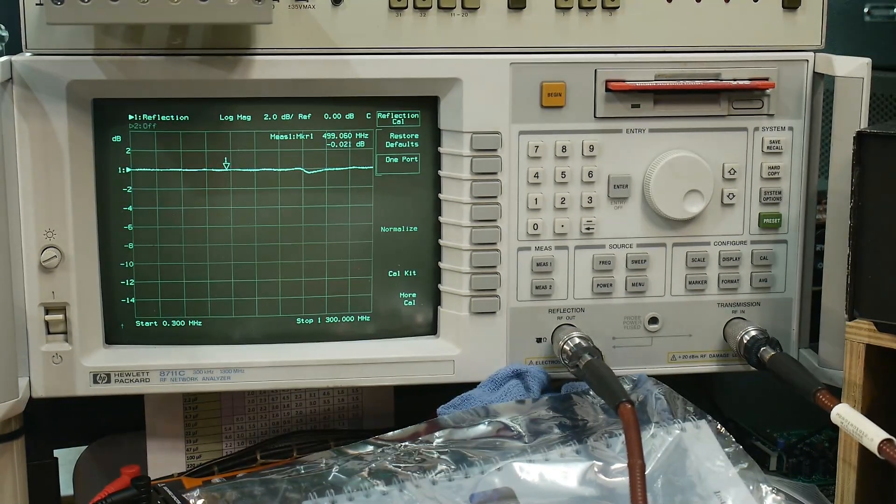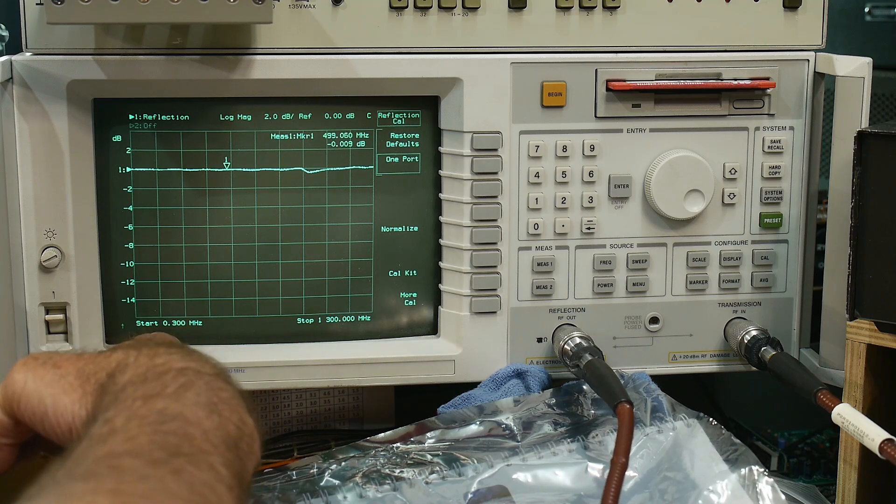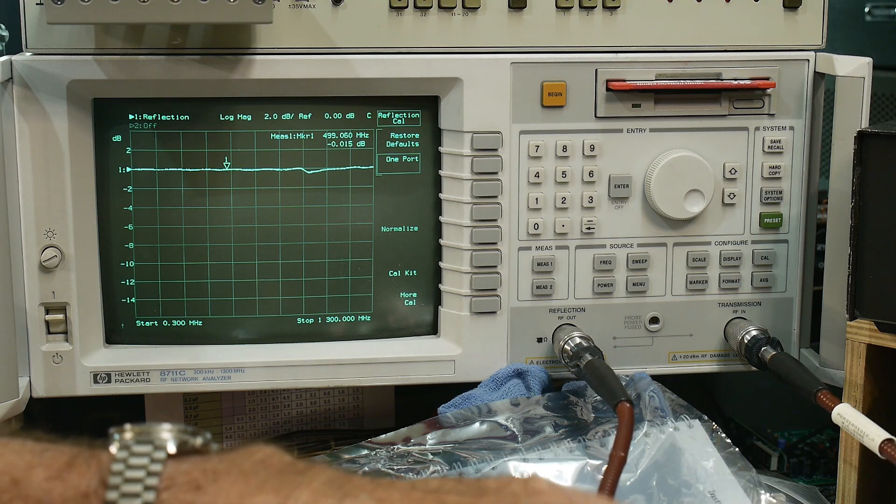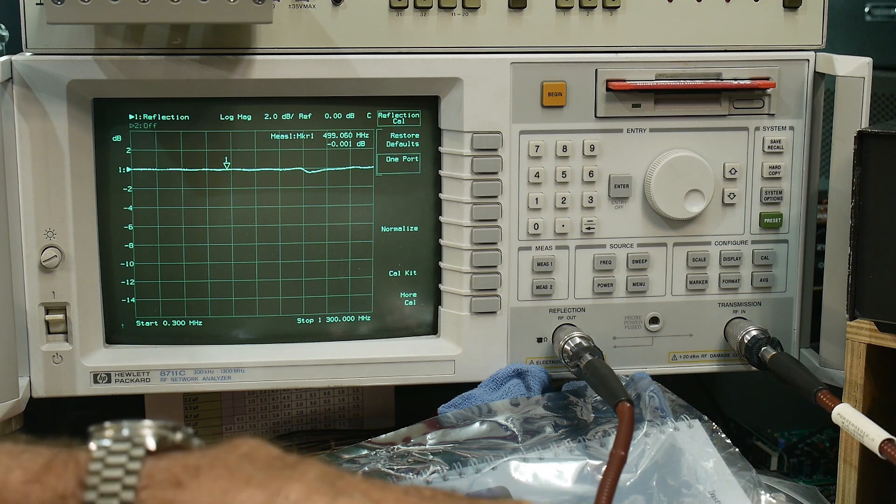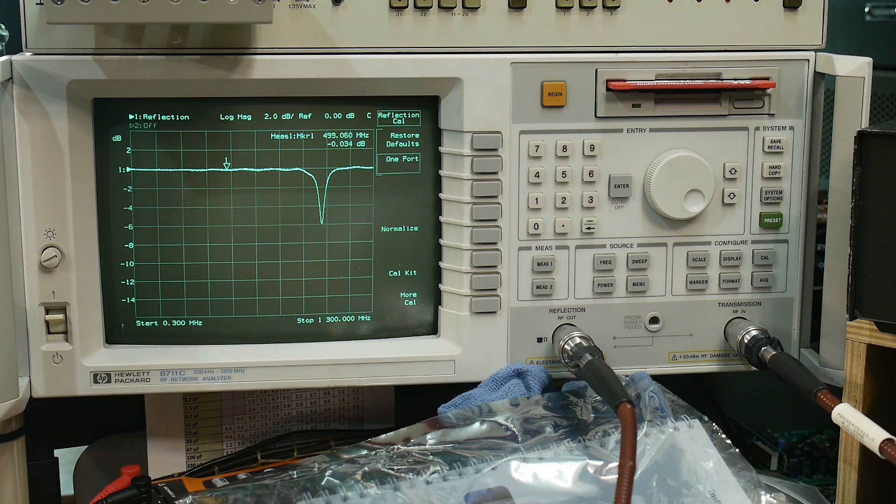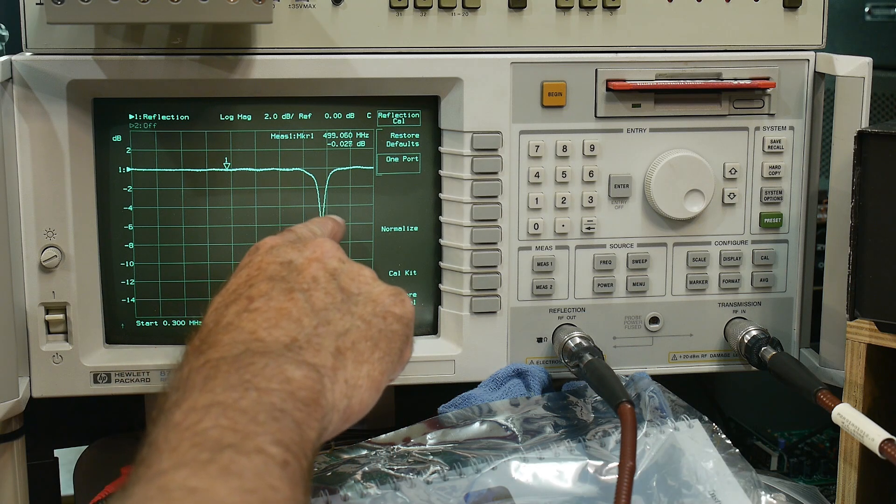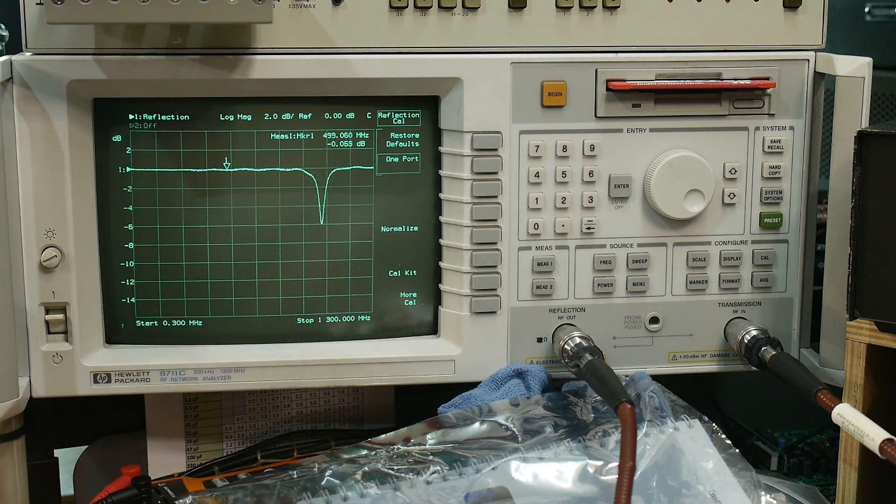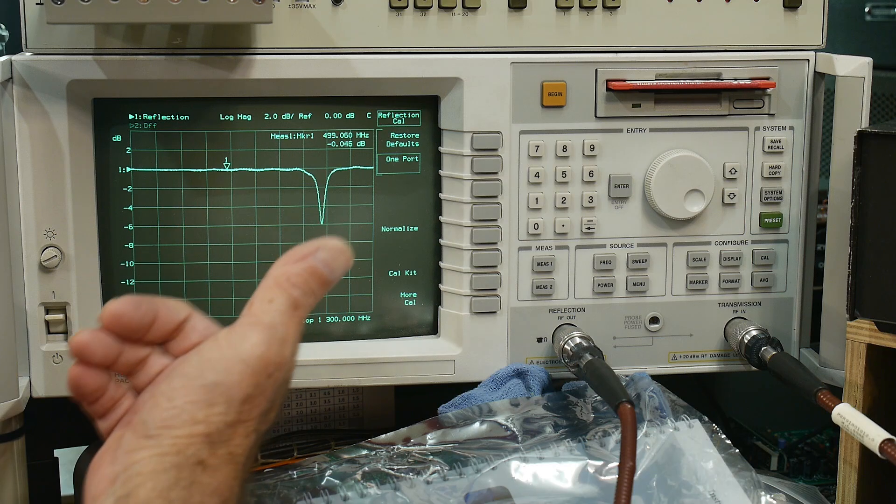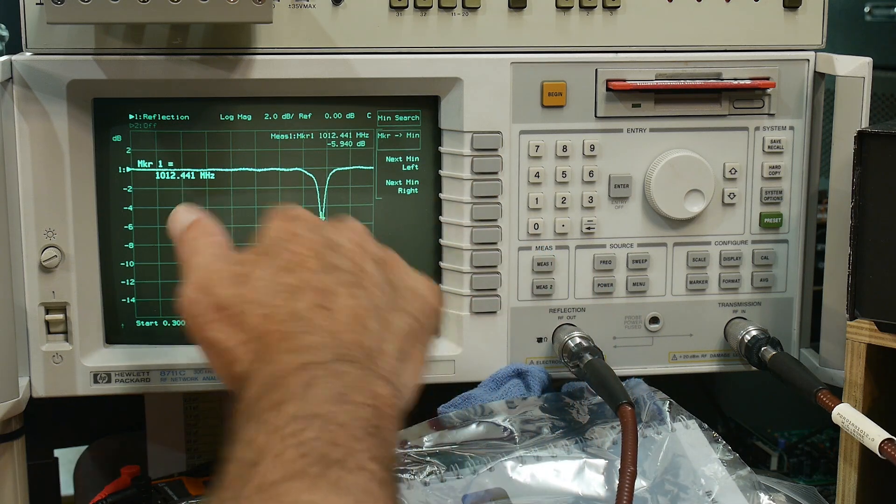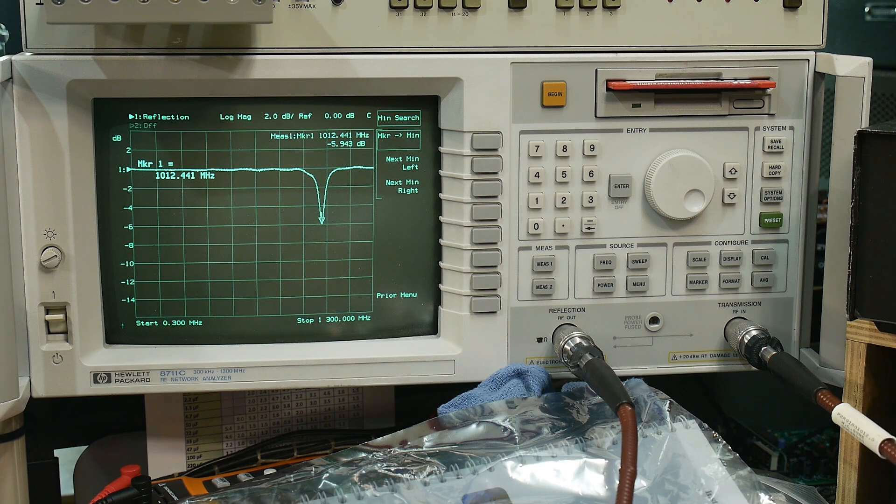I've already calibrated my machine here. I'm sweeping between 300 kilohertz and 1.3 gigahertz. Let me attach the VNA to the input filter, and there we go. We get a really good match here at a particular frequency. It's down by 6 dB, so we get a 6 dB attenuation at that frequency. That's going to be our filter frequency. We can turn on a marker and do a marker search to the minimum, and it says that filter is adjusted to 1.012 gigahertz.